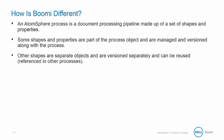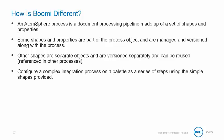Other shapes are separate objects, called Components, which are versioned separately and can be reused, like a map. Components are independent of the process and can be shared or referenced in many other processes. To configure a complex integration process within AtomSphere, you drag and drop shapes from a palette onto the process canvas and then connect them into a series of steps.